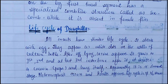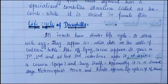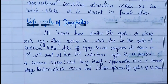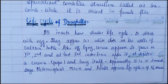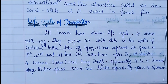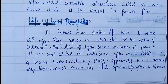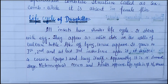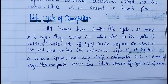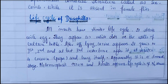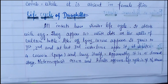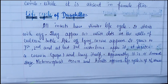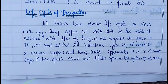Now we will come to the life cycle of Drosophila. All insects have a similar life cycle. It starts with the egg, which appears as five dots on the walls of the culture bottle. After egg laying, larvae and then pupa appear — it grows through first, second, and third larval stages. After this it secretes a cocoon in the pupa stage and suspends itself. This is an apparently dormant stage where metamorphosis occurs and an adult appears. This life cycle takes two to three weeks.